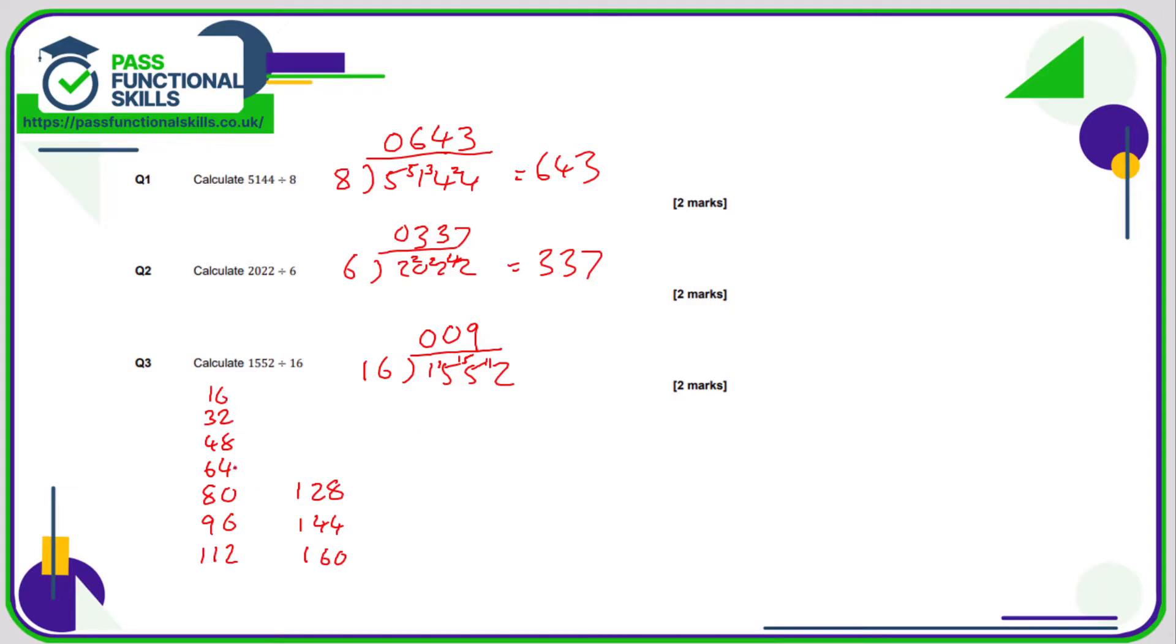So that means we've now got a remainder of 11 and 112 divided by 16 is one, two, three, four, five, six, seven. So the answer is 97.